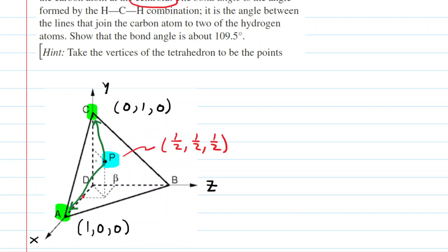Admittedly the picture's a little unclear, but we're looking for the angle between those two vectors. We're going to call that first vector vector A, and the second vector we may wish to call vector B. We're looking for the angle between those vectors, but before we can do that, we need to come up with the representation of those two vectors.